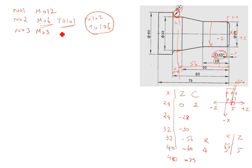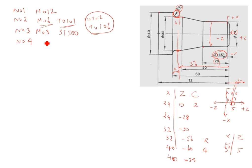N03: M03 S1500 — M03 is spindle on. You can write the spindle speed as 700, 1000, or 1500; with a lower spindle speed it will take more time to cut the object. N04: M08, which is coolant on.